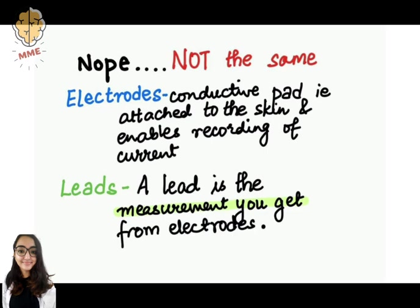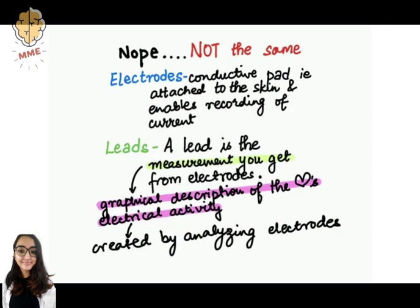An electrode is a conductive pad that is attached to the skin and enables recording of electrical currents, whereas an ECG lead is a graphical description of the electrical activity of the heart and it is created by analyzing several electrodes.